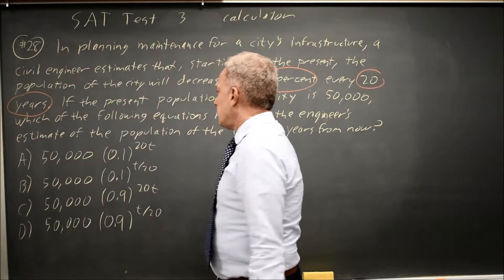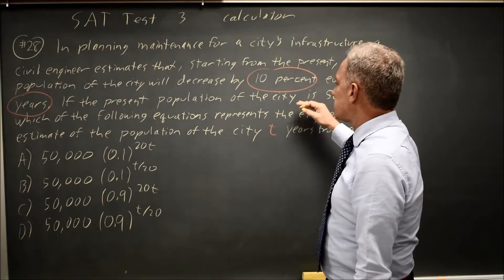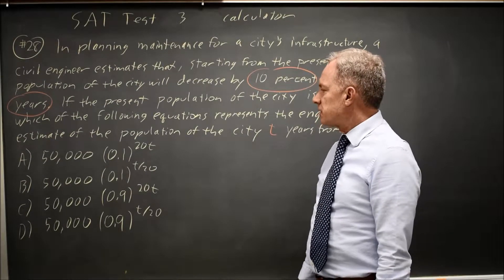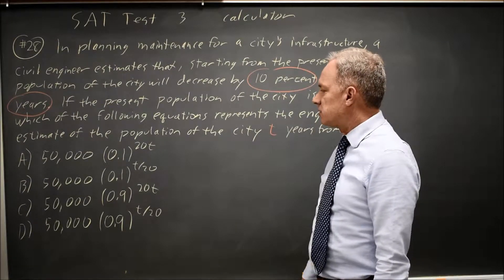And the question is, if the current population is 50,000, which equation represents the engineer's estimate of the population of the city two years from now?